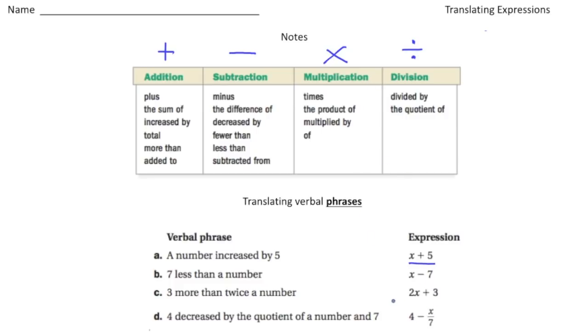And then sometimes these are blended together. So for example this one here for letter C it says three more than twice a number, so notice twice a number means two times a number and then three more means added to. And then this one here we have four decreased by the quotient of a number and seven.